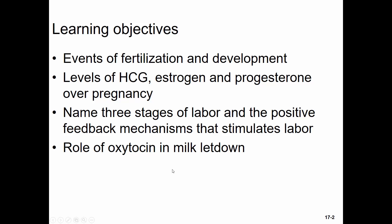These are our learning objectives. I'd like you to be able to describe the events of fertilization and some aspects of development — mostly about fertilization, but then the fertilized zygote becomes an embryo and then becomes a fetus. There are important hormones for pregnancy, so you ought to be able to follow the levels of HCG, human chorionic gonadotropin, estrogen, and progesterone over the course of pregnancy. Labor and delivery is a positive feedback mechanism with three stages, and finally we'll talk about the role of oxytocin in milk letdown.